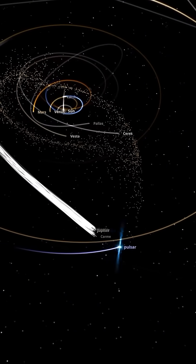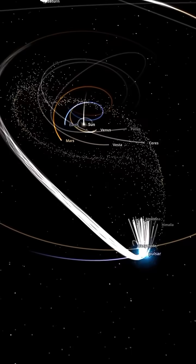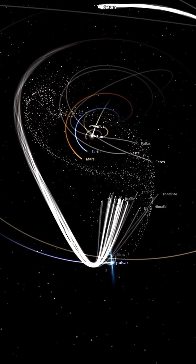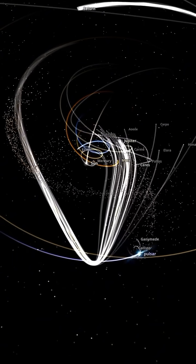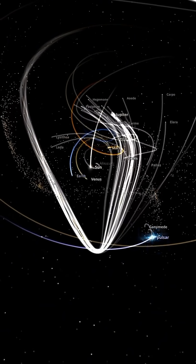Earth's orbit becomes unstable. Our planet veers off its usual path, sometimes getting too close to the sun and causing extreme heat, other times drifting too far away and leading to freezing temperatures. Life on Earth would become impossible.